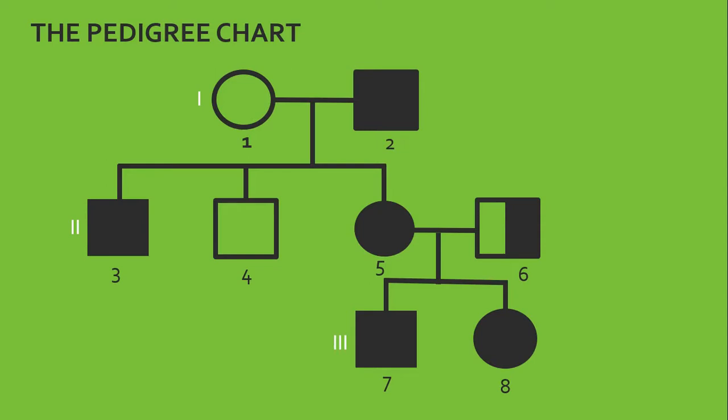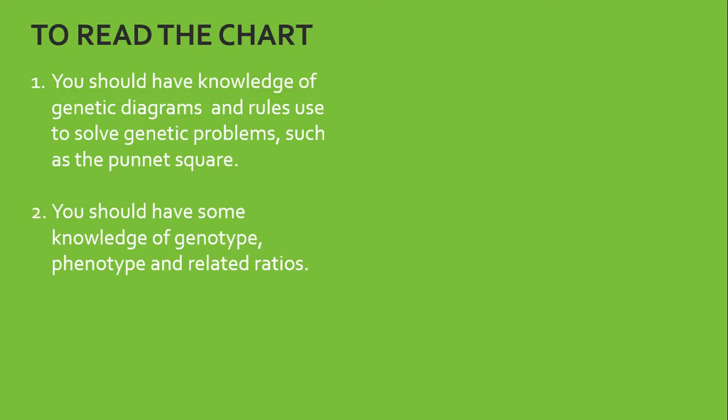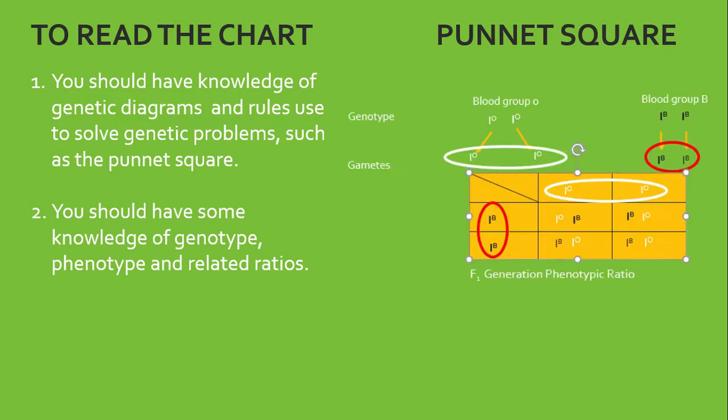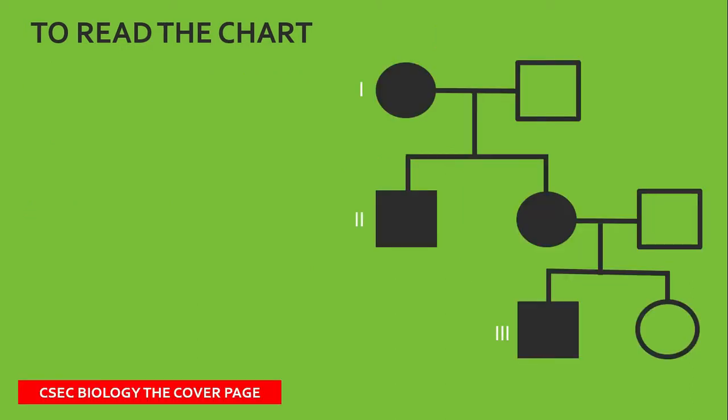To read the chart, you should have knowledge of genetic diagram and rules used to solve genetic problems such as the Punnett square. You should have some knowledge of genotype, phenotype, and related ratio. Now to the right here, we are looking at the Punnett square. This is pretty much blood type that we are looking at. You could just follow us in the description below to see the video for this particular Punnett square. But you must have some knowledge of Punnett square to be able to solve the genetic diagram.